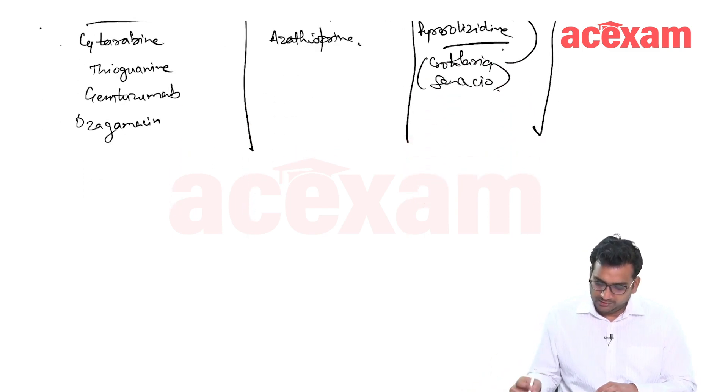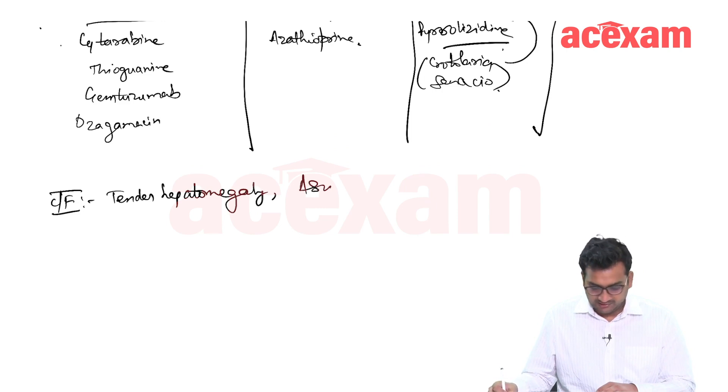What all are the clinical features? The clinical features are the same, tender hepatomegaly and ascites. Tender hepatomegaly and ascites.